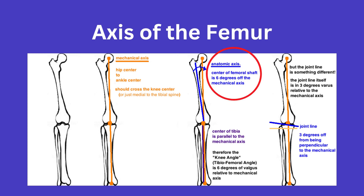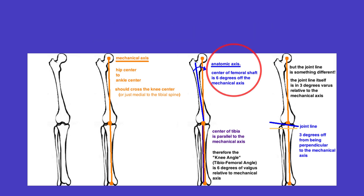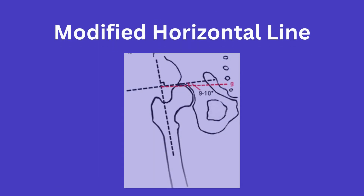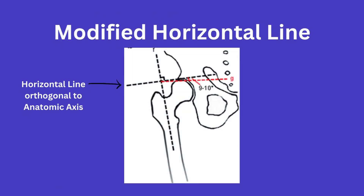As a side note, there has been a recent modification to this horizontal line stating that it is necessary to adjust for the difference between the anatomic axis and the mechanical axis and gravity line. Thus, the recent modification states that the horizontal line should be positioned about 9 to 10 degrees inferior to where it is now, as seen here.